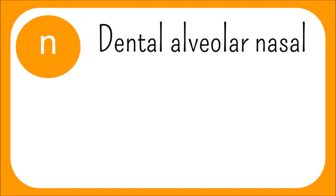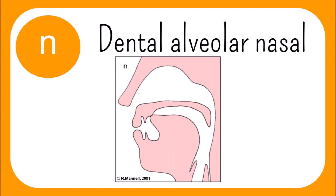N is a dental alveolar sound, articulated by placing the tip or blade of the tongue at the alveolar ridge behind the upper teeth. It is also voiced, meaning the vocal cords vibrate.